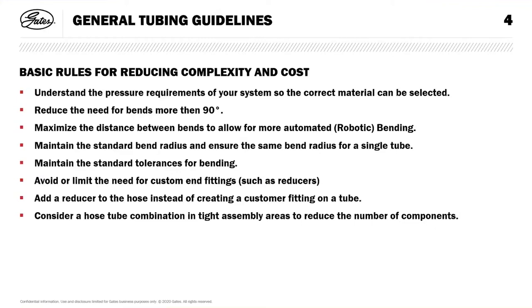Try to keep the bends at 90 degrees or less — this makes the bending operation quicker, as most of the bending is done on automatic machinery. Maximise the distance between the bends; again, this is for the automation side. Try to maintain the standard bend radiuses, so you've got one bend radius throughout the length of the tube. We can do up to eight, but this incurs cost because it slows production down.